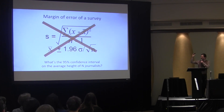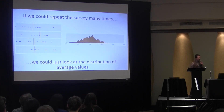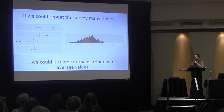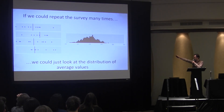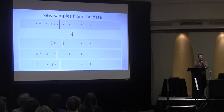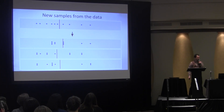Me neither. No! Let's not do it this way. Let's think about this. What we really want is what we could get if we could repeat that survey thousands of times. You repeat the survey a thousand times, we take the average of each, we plot a histogram. We don't have a thousand surveys, but we can make new samples from our existing samples. We take each one of those values, we sample the same number of points with repetition.